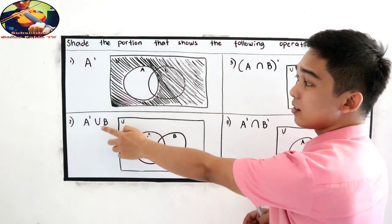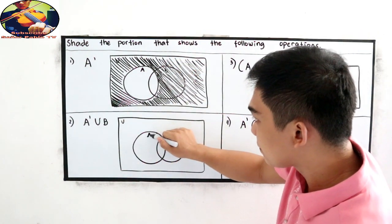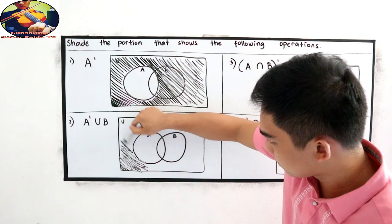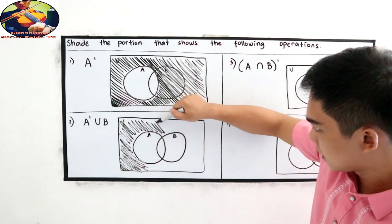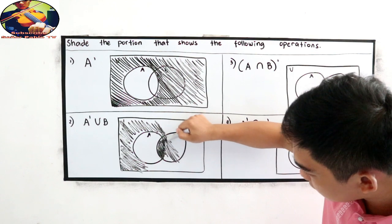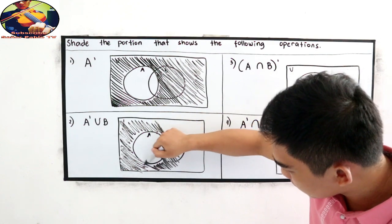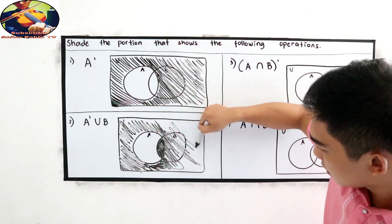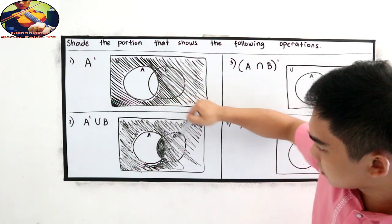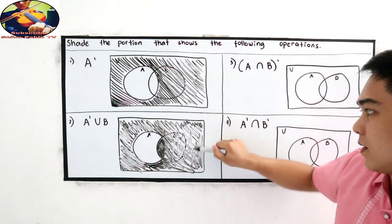This is similar in number one. Let's just include union B. So for number one, let's shade outside A. Outside A. Outside A. Then include B, so up to here. Because this part also belongs to B. So let's shade that part or that portion. This is now our final answer. That's it. Shade those parts.